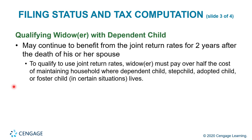For qualifying widower with dependent child, you may continue to benefit from the joint return rates for two years after the death of a spouse. To use joint return rates, the widower must pay over half the cost of maintaining a household where a dependent child, stepchild, adopted child, or foster child in certain situations lives. This is a special category with specific requirements that must be met.